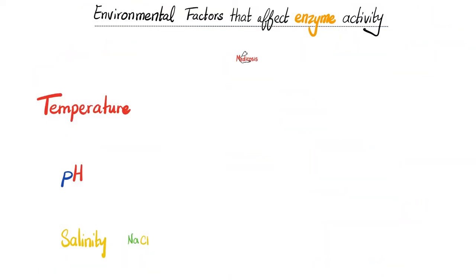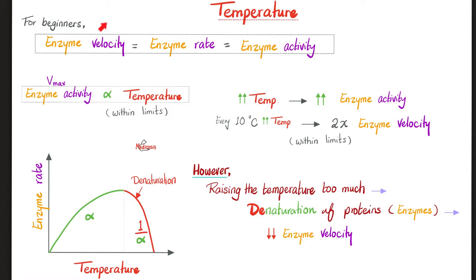All of this was reviewing what we discussed before. Today, we'll talk about the effect of temperature, pH, and salinity on your enzyme activity. Number one, temperature. For beginners, please recognize these as synonyms. Enzyme velocity is the same as enzyme rate, is the same as enzyme activity. What's the effect of temperature on enzyme activity? They are directly related, which means if I raise the temperature, enzyme activity or velocity should go up. Ad infinitum? No.